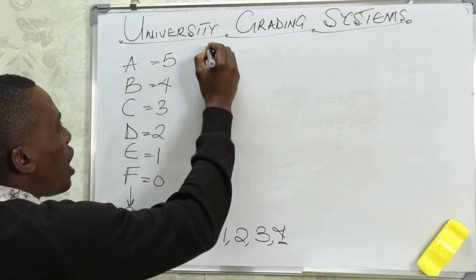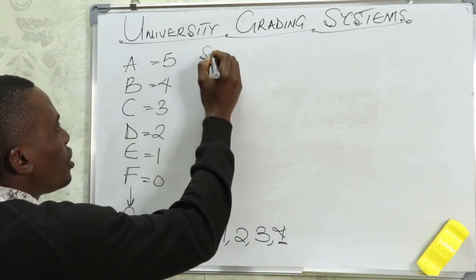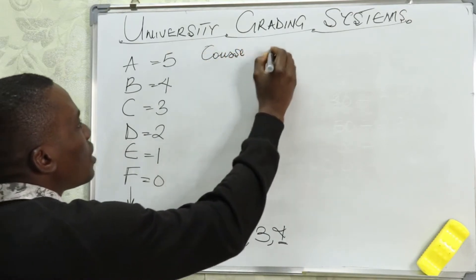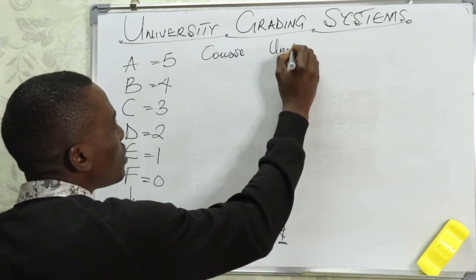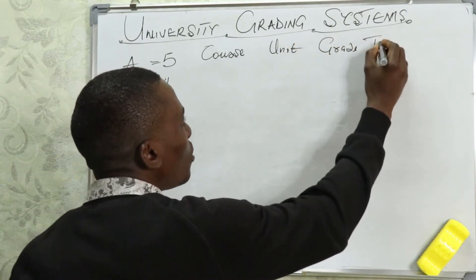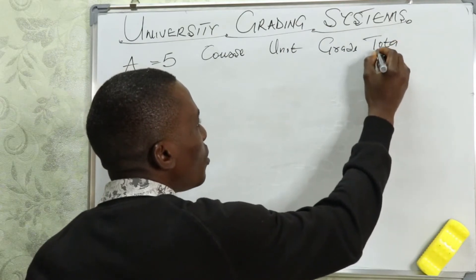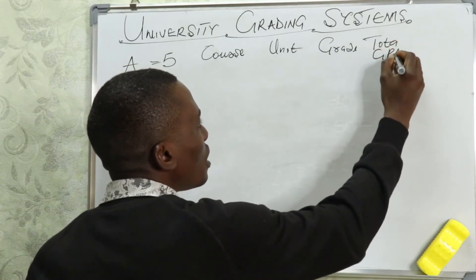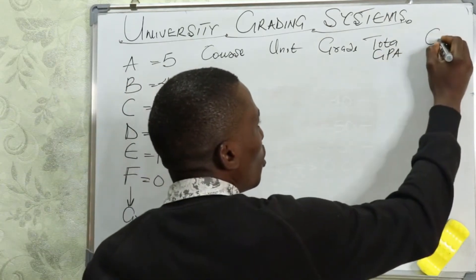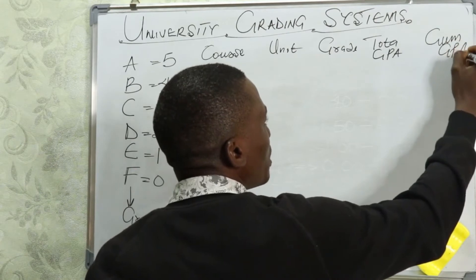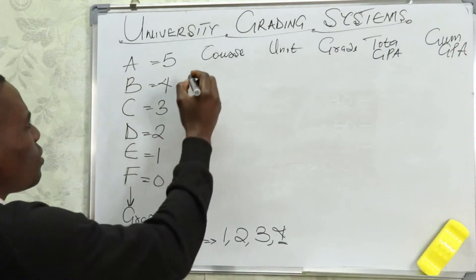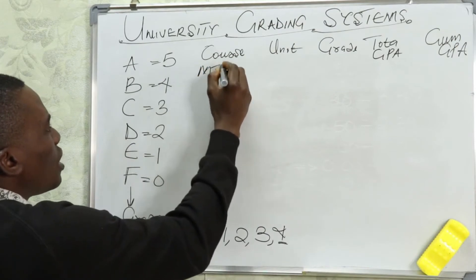Let's assume you have your courses — we call them courses in the university. You have the courses, you have the units for the courses, you have the grade, you have your total grade point, and finally, we are going to have your cumulative grade point. Now, how do we calculate this? Let's assume that we have five courses: Math 101, Phy 101, Chem 101, GSC 101, and Bio 101.